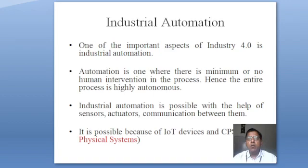Before understanding cyber physical systems, we should first know what industrial automation is. Industrial automation is one factor which drives every industry. This is the reason industrial revolutions have happened from Industry 1.0 to 2.0 to 3.0 to 4.0. The evolution of Industry 4.0 is to remove human interference in industrial processes. Industrial automation means minimum or no human interference, and all processes are autonomous. Industrial IoT and cyber physical systems play a very major role in making processes autonomous.